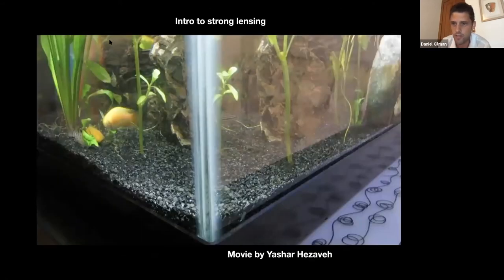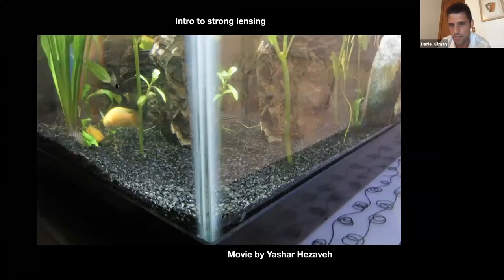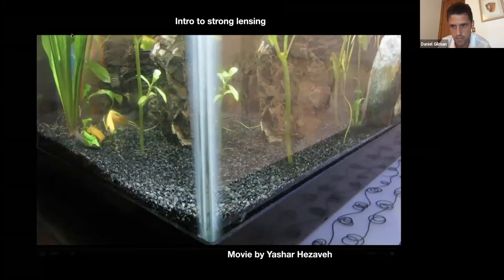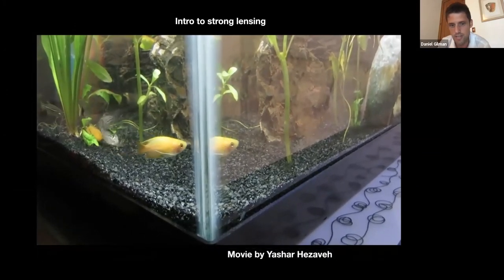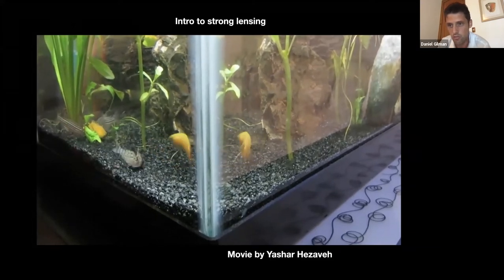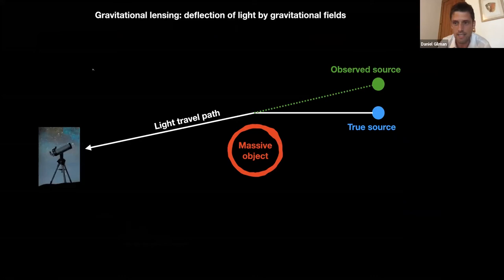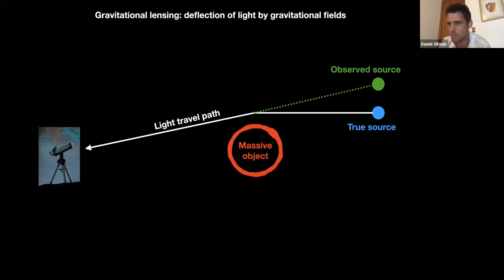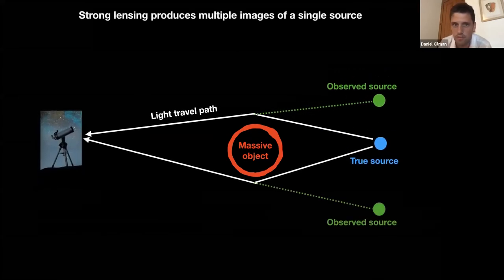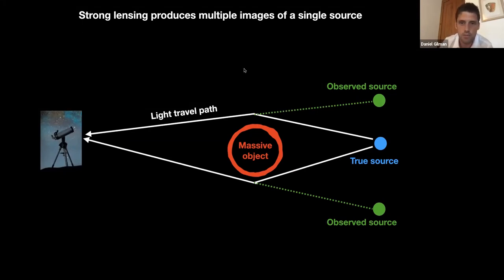I like to introduce strong lensing with this movie. This is a fish tank with a fish in it. As the fish approaches the corner of the fish tank, you'll see the fish twice — two images of the same fish as it approaches the corner. There's only one fish, but we observe multiple images of it. You can think of this as a strongly lensed fish. If you take the same intuition and apply it to cosmology, rather than just a weak distortion or slight displacement, if you have a more precise alignment, you'll actually produce multiple images of a single background source. That's what characterizes strong lensing from weak lensing: in strong lensing, we get multiple images of a single source, highly distorted and highly magnified.